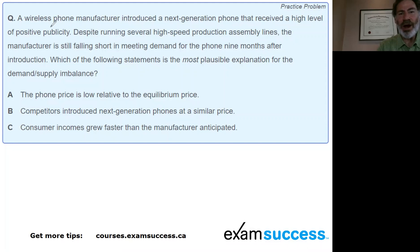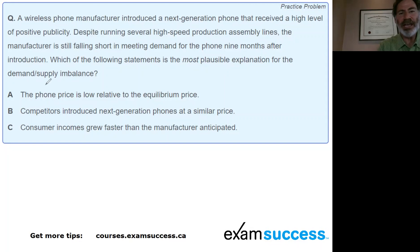We're looking at a wireless phone manufacturer that introduced the next generation phone that received a high level of positive publicity. Despite running several high-speed production assembly lines, the manufacturer is still falling short in meeting demand for the phone nine months after introduction. Which of the following statements is the most plausible explanation for the demand-supply imbalance?